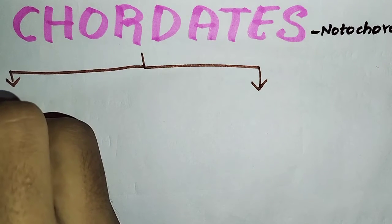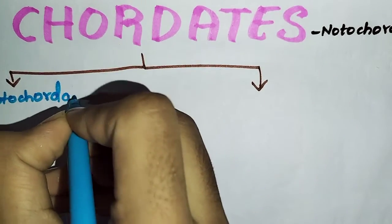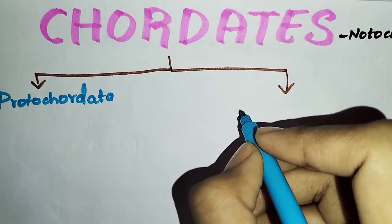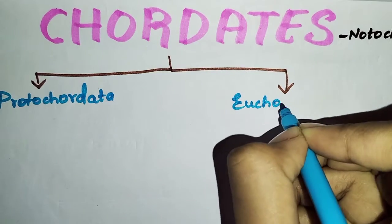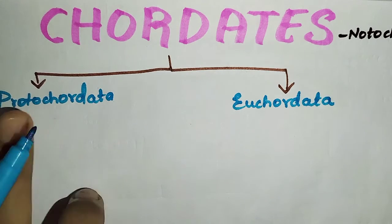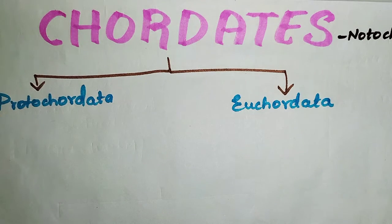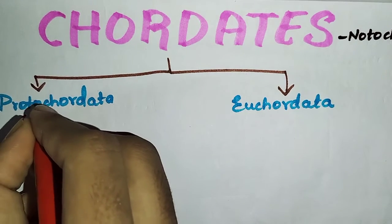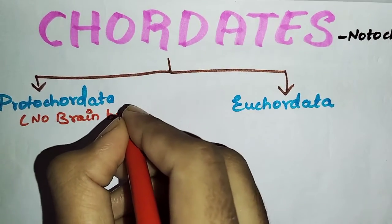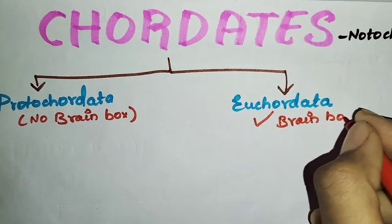The first subgroup is Proto-chordata, as they are primary. The second is Eu-chordata, as they are the more developed ones. Proto-chordata and Eu-chordata are distinguished on the presence of a brain box: Proto-chordata have no cranium, while Eu-chordata have the cranium present.